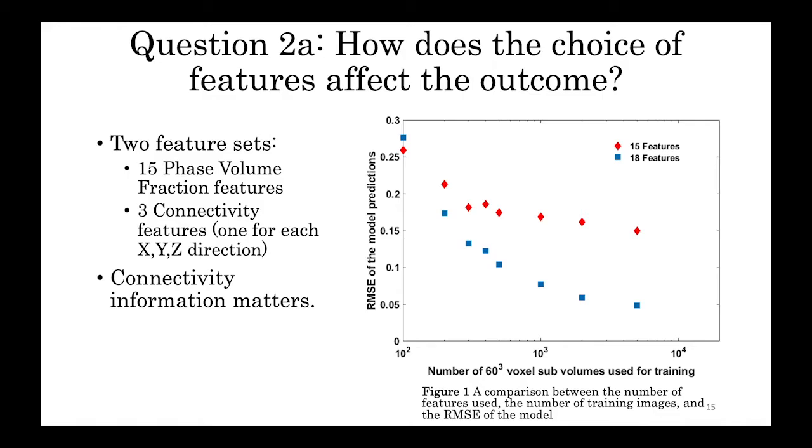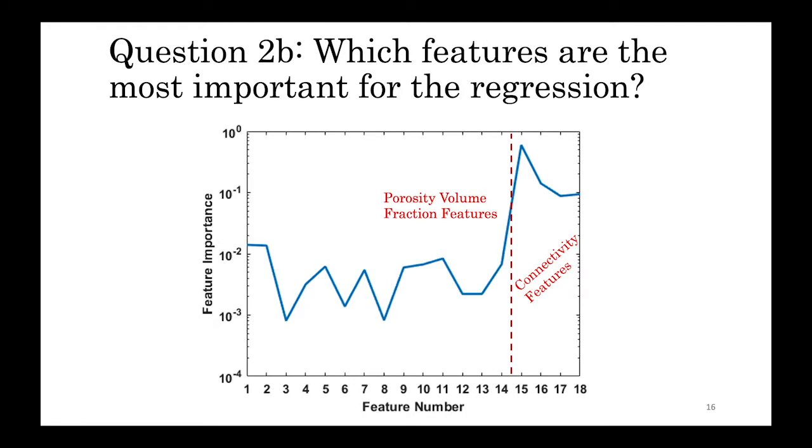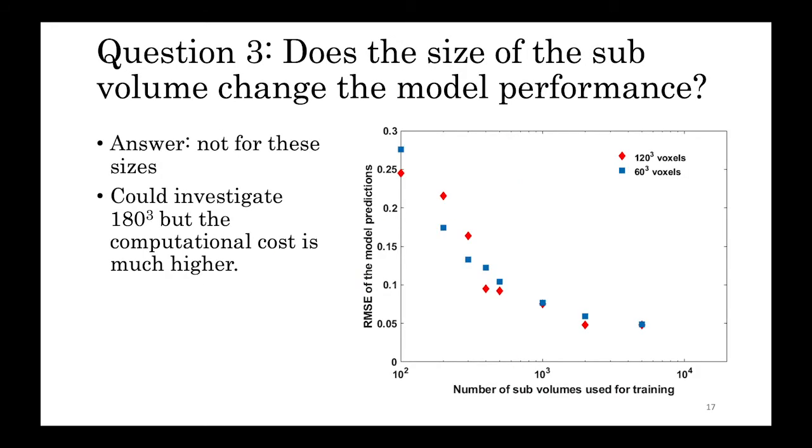Unsurprisingly, the connectivity matters a lot and resulted in an improvement from 14 to 4% root-mean-squared error. We wanted to know which features are the most important features for the regression. And here we can see that the model weights the connectivity much more highly than the individual porosity volume fractions, which makes sense considering the close relationship between connectivity and permeability.